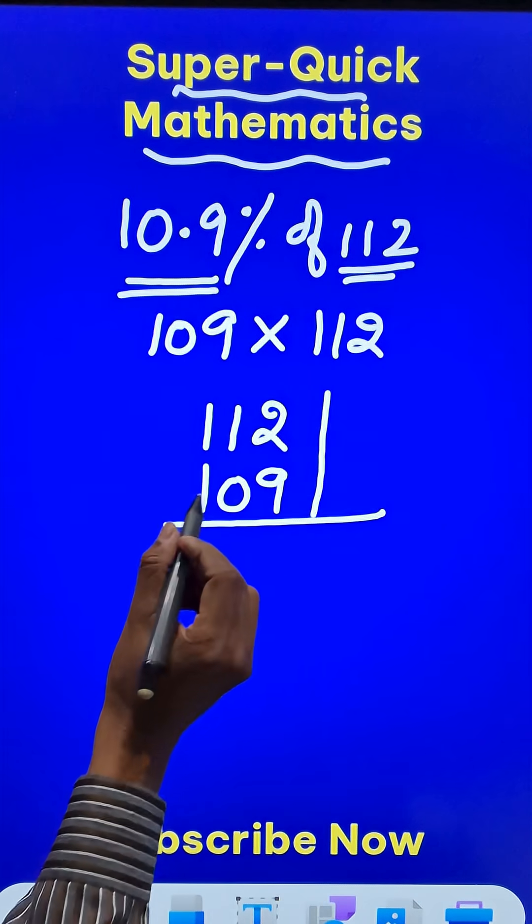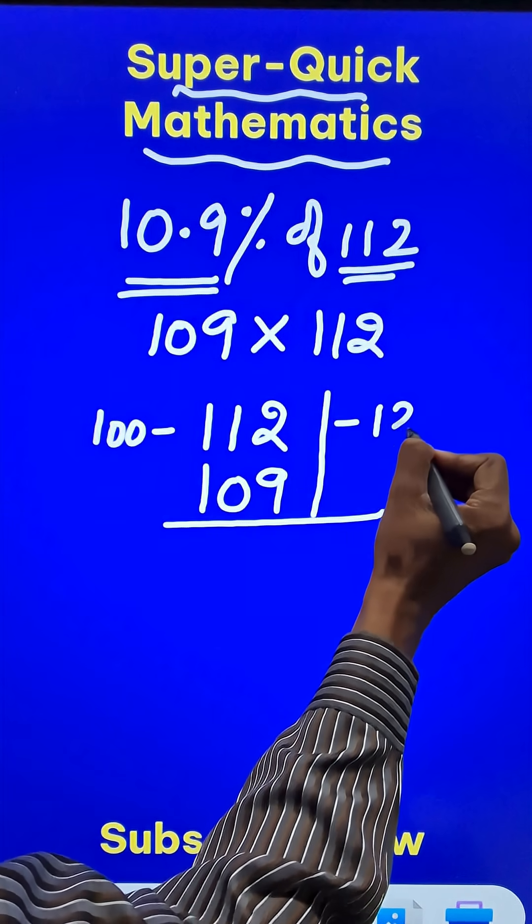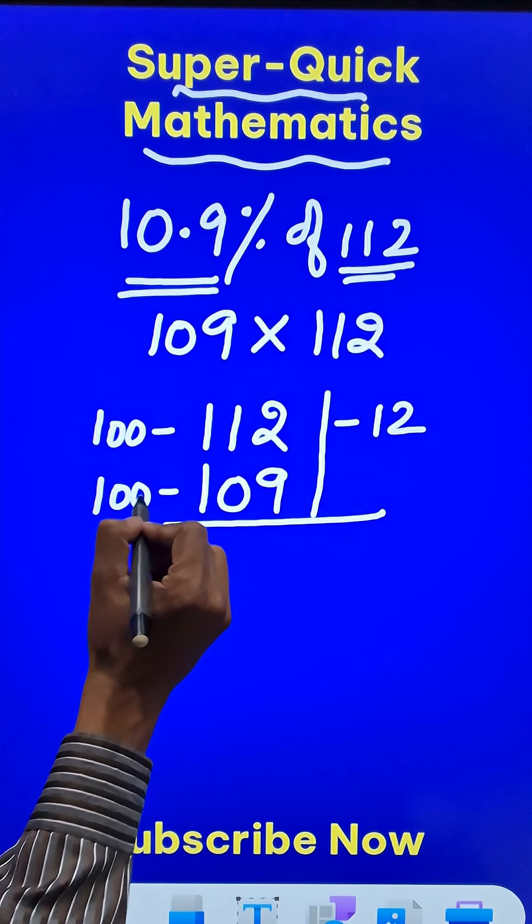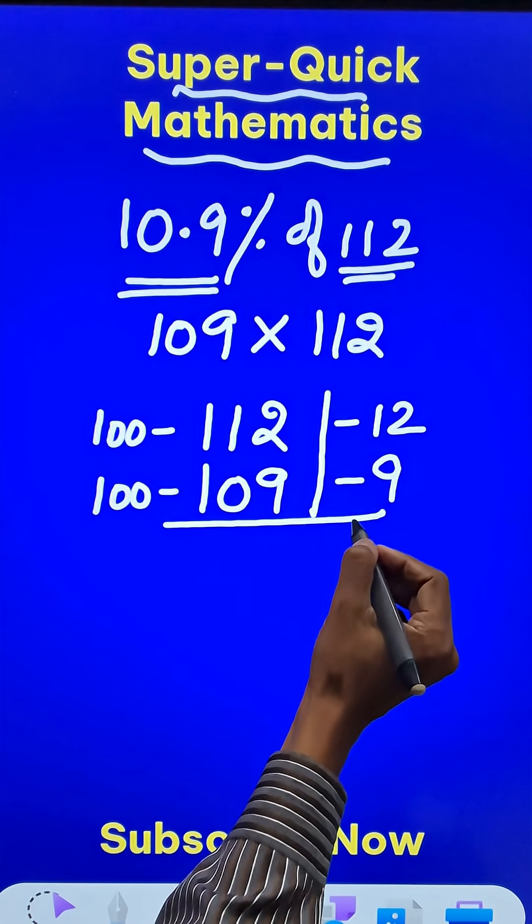So, let's multiply them. The deviation of 112 from 100 is negative 12 and the deviation of 109 from 100 is negative 9. Now, when you multiply 12 and 9, you get 108.